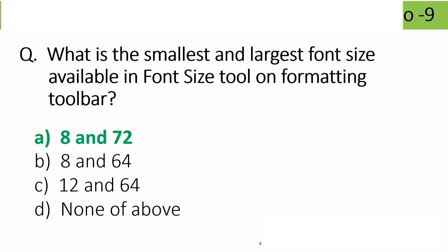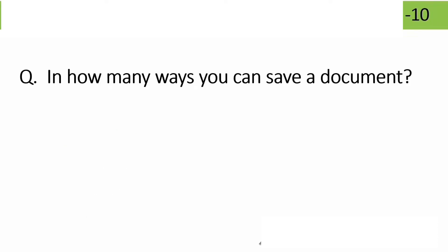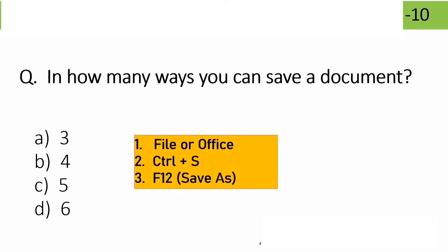In how many ways can you save a document? Options: 3, 4, 5, 6. The correct answer is 3 — you can save using the File button, Ctrl+S, or the Save As dialog box. Those are the three ways to save a document.